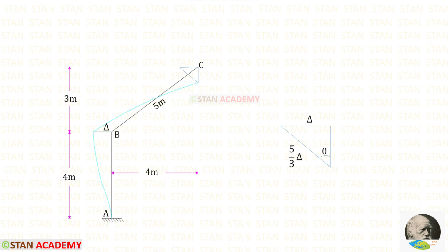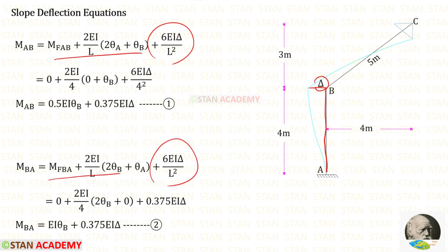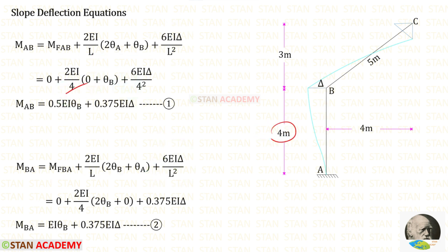Taking only the left side of the frame: for member AB, the displacement is delta, and for member BC, the displacement is (5/3) × delta. Now let us write the slope deflection equations for member AB. Since this member is subjected to sway delta, we add the sway term to the equations, taken as positive. The length of AB is 4.